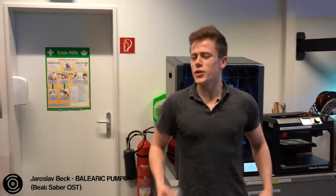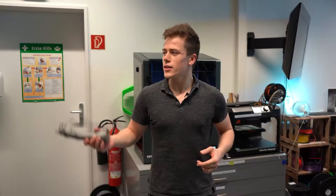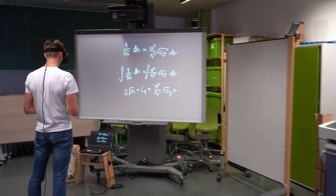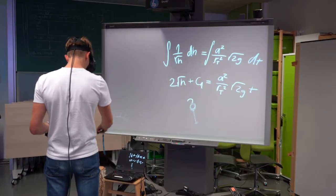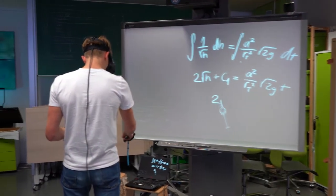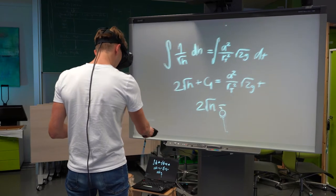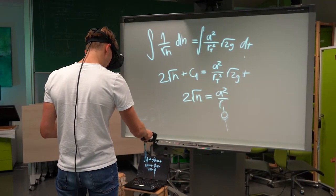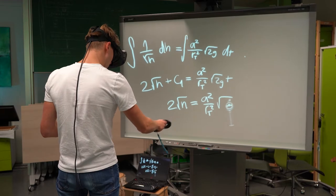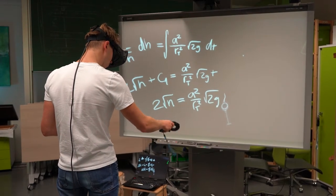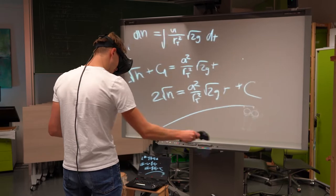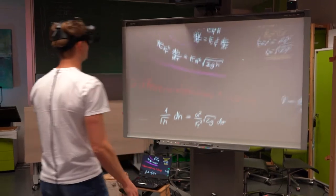Das wollte ich euch eigentlich nicht zeigen. Es ging eigentlich eher um was Wissenschaftliches. 2 mal Wurzel H A² durch R T² Wurzel 2G mal T plus die Konstante. Und das ist dann das Ergebnis.